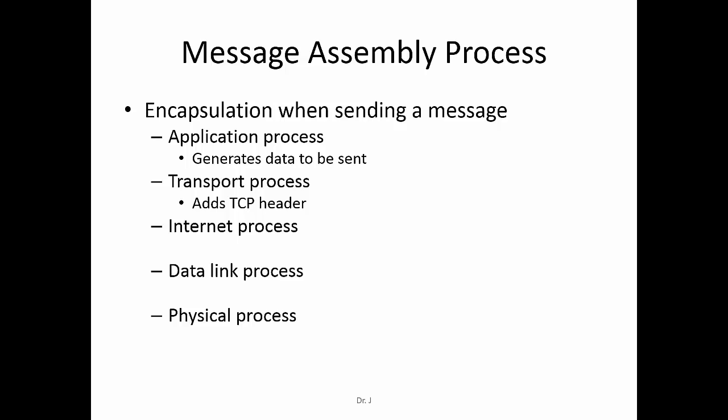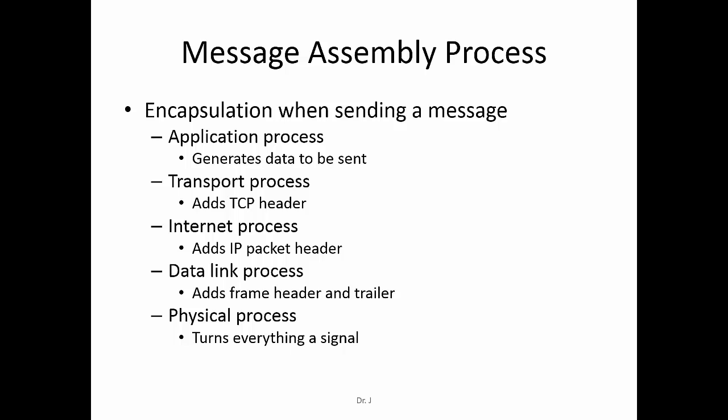The third process involved is called the internet process, which adds an IP packet header to the combination of the data and the TCP header. On top of that, you add the IP header. Then there is another process called the data link process, which adds a frame header and a trailer to the combination of the original data, TCP header, and IP packet header. The frame is the big envelope that contains everything. Finally, everything is turned into an electronic signal and sent to the network.